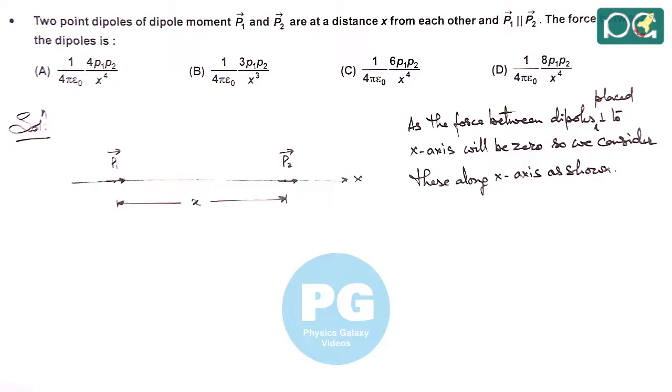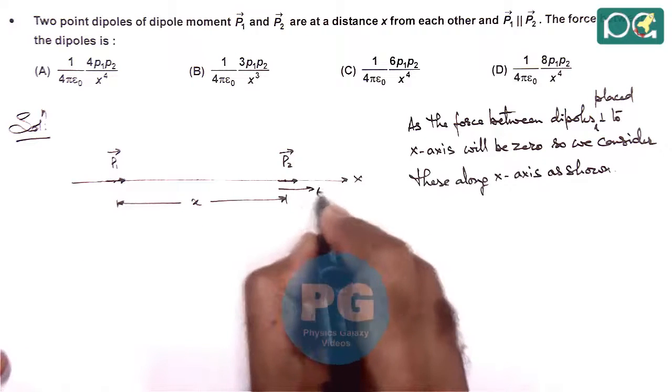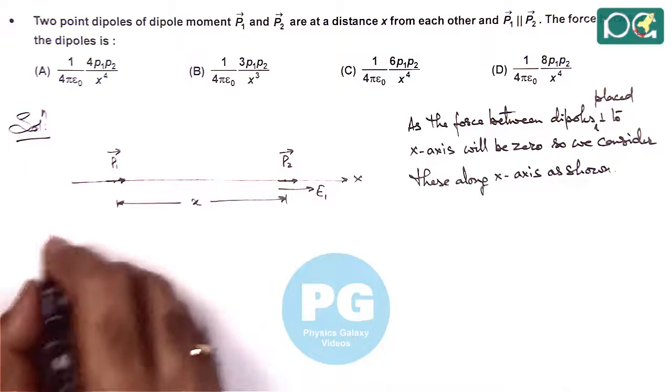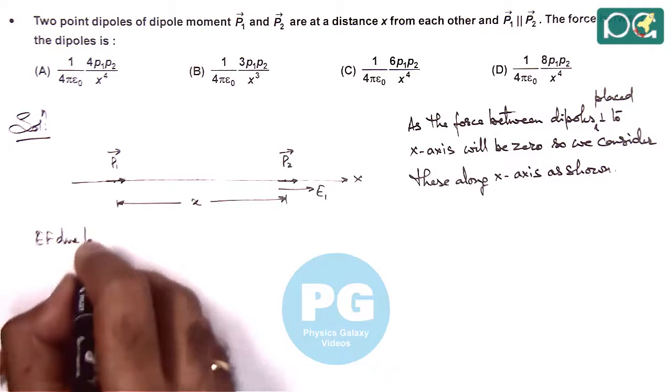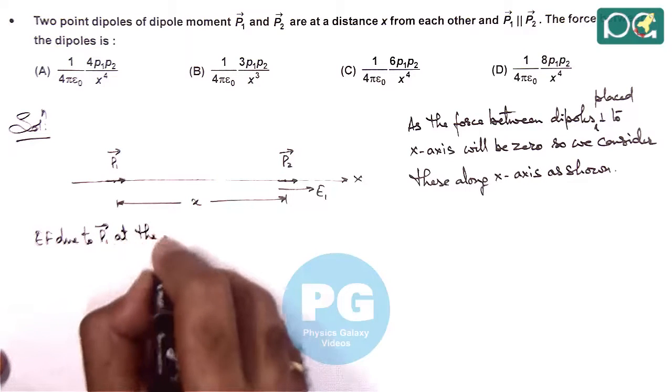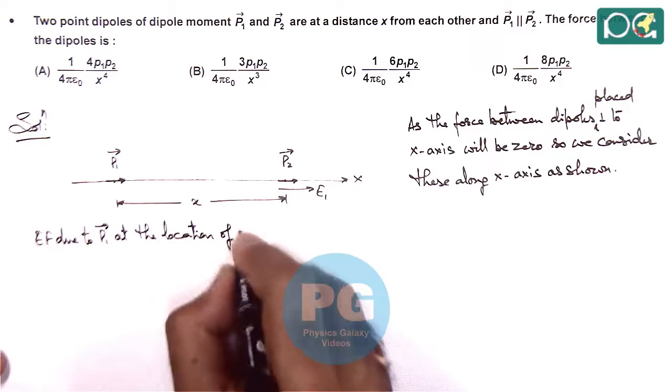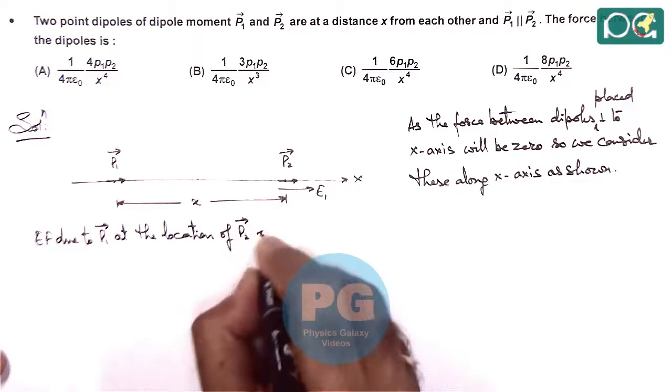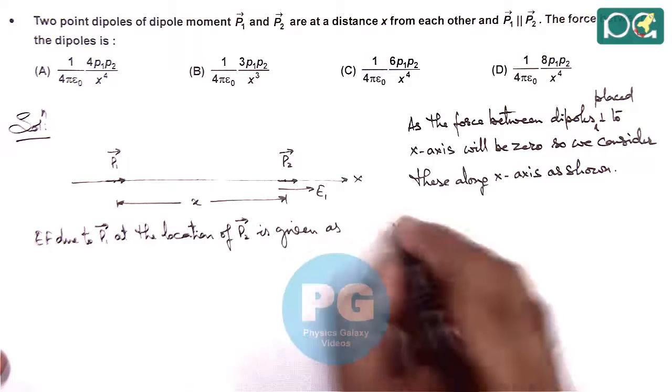In this situation, we can calculate the electric field due to p1 at the location of p2. The electric field due to p1 at the location of p2 vector is given as this electric field E1.